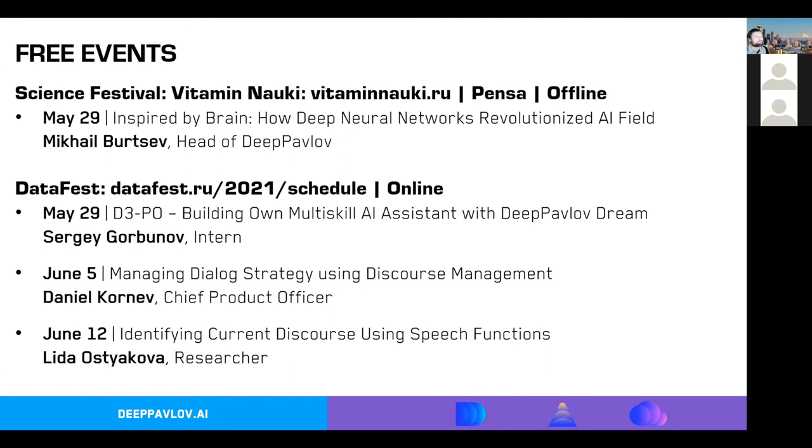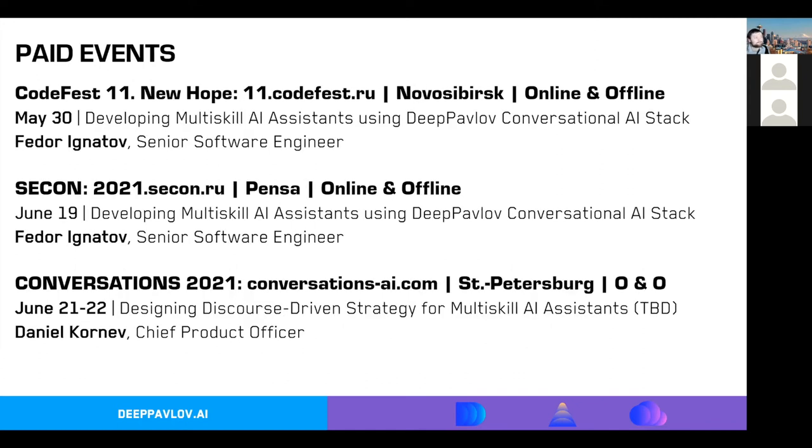We'll have lots of Russian events happening in the next month or so. We'll have a couple events since the end of May. Mikhail Burtsov will talk at an offline event in Penza about inspired by brain, how deep neural networks revolutionized the AI field. Then one of our interns will talk online at DataFest about how to build multi-scale AI systems using DeepPavlov Dream. They've built a copy of C-3PO from Star Wars. We'll continue with talks focused on managing dialogue strategy using discourse management, followed with a deep dive into speech function classifiers. We'll have three talks, offline events and online events in Novosibirsk, Penza, and St. Petersburg.